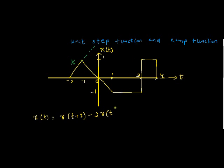So now we have a signal. We had a ramp function going in this fashion, but we subtracted another ramp with twice the slope at t equal to minus 1. Our signal is here now and will continue to go in this fashion. Unless we make changes at t equal to 1, which we will be doing now.